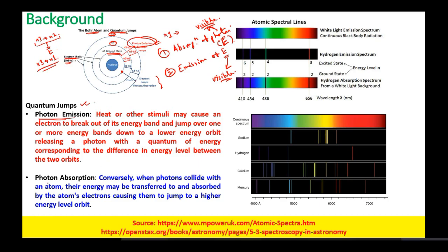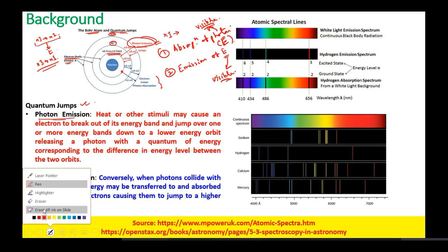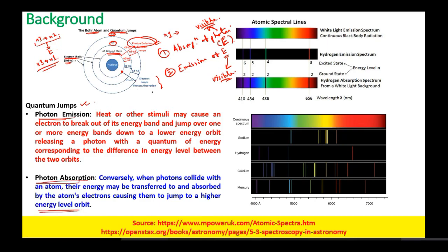The second type of quantum jump is photon absorption. When photons collide with an atom, their energy may be transferred to and absorbed by the atom's electrons, causing them to jump to a higher energy level orbit. So there are two possibilities: one causing absorption and the second causing emission.